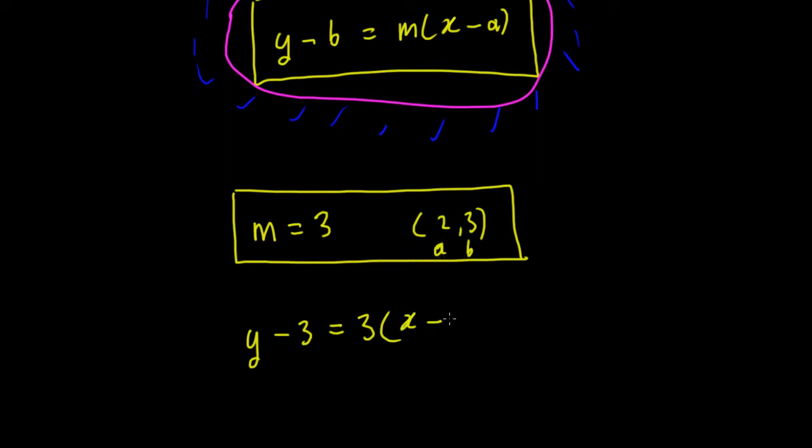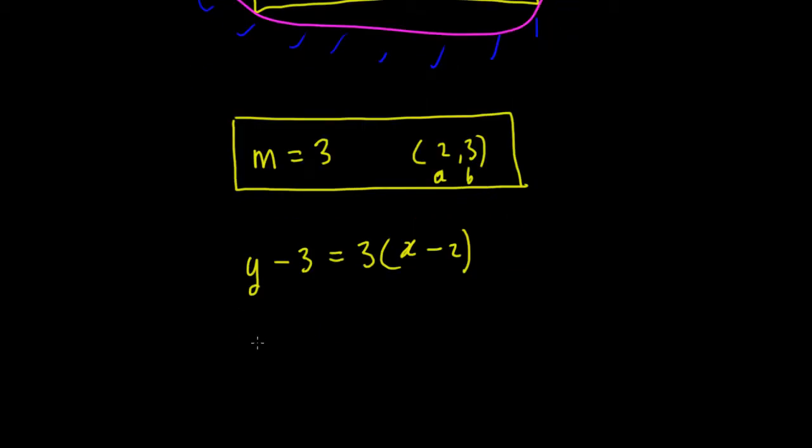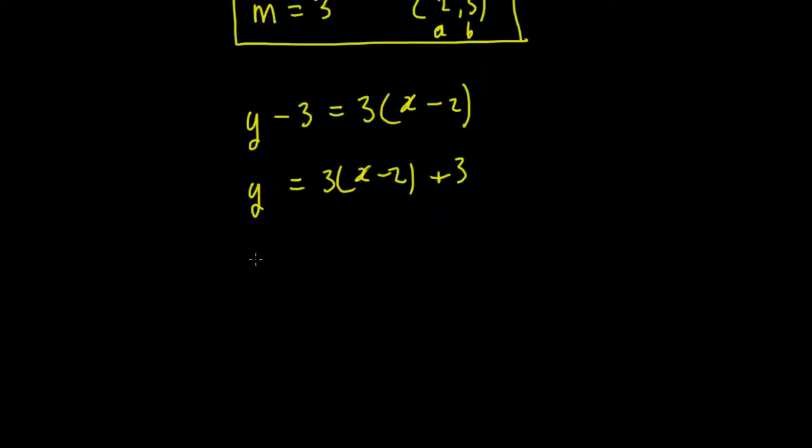So then that is 3 times x minus 2. Then you can say that y equals 3x minus 3 times 2 is 6 plus 3. So then you can say that y equals 3x minus 6 plus 3 is minus 3. So that there is the answer, that's the equation of that line.